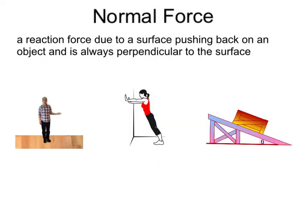The normal force. The normal force is a reaction force due to a surface pushing back on an object and is always perpendicular to the surface. We represent the normal force by the letter F with the subscript N for normal. You can see me here standing on the ground. I'm exerting a force on the ground — this would be the force of gravity. The ground in turn pushes back up on me and exerts what we call the normal force. That force is technically perpendicular to the ground.